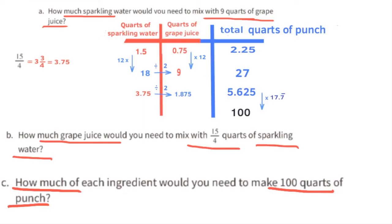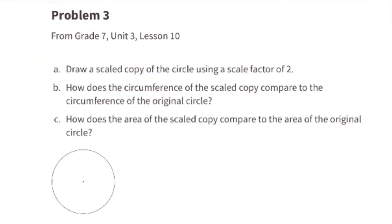So we multiply both ingredients by 17.7 repeated. In 100 quarts of punch you'd have 66.6 repeated quarts of sparkling water — the same as 66 and two-thirds quarts — and 33.3 repeated quarts of grape juice, the same as 33 and a third quarts. 66 and two-thirds plus 33 and one-third equals 100 quarts of punch. Problem number three from seventh grade unit three, lesson 10.